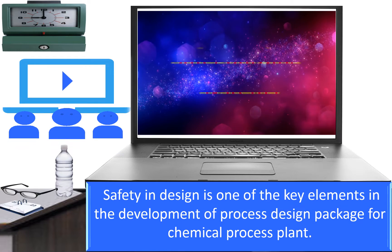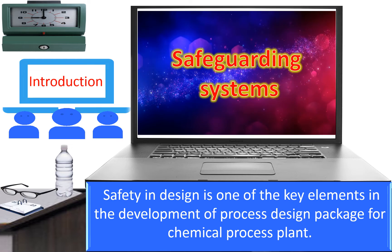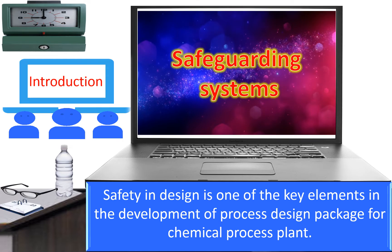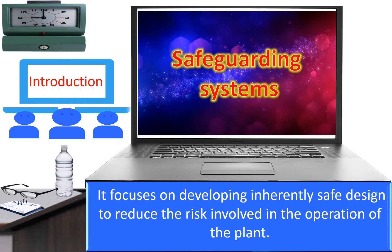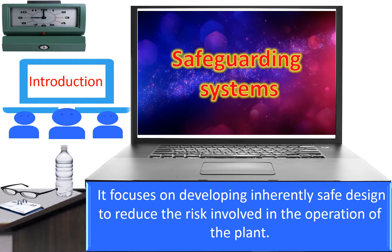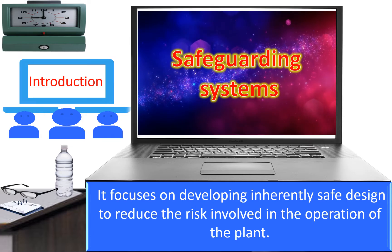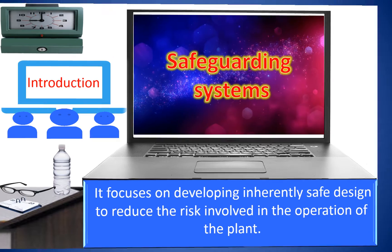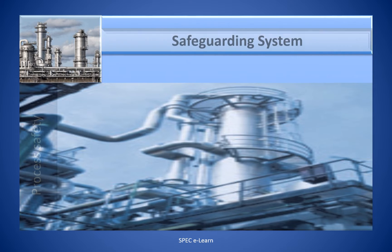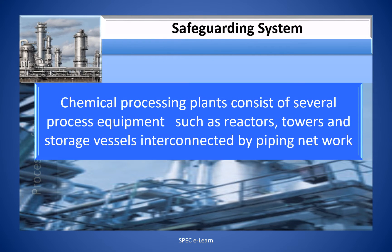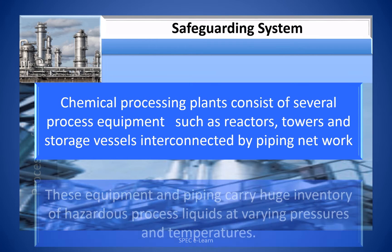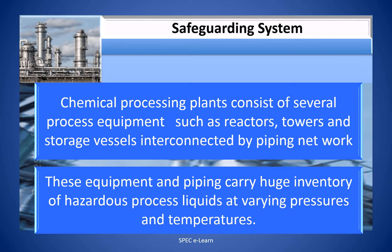Safeguarding Systems. Safety in design is one of the key elements in the development of a process design package for a chemical process plant. It focuses on developing inherently safe design to reduce the risk involved in the operation of the plant. Process plants consist of several process equipment such as reactors, towers, and storage vessels interconnected by a piping network.